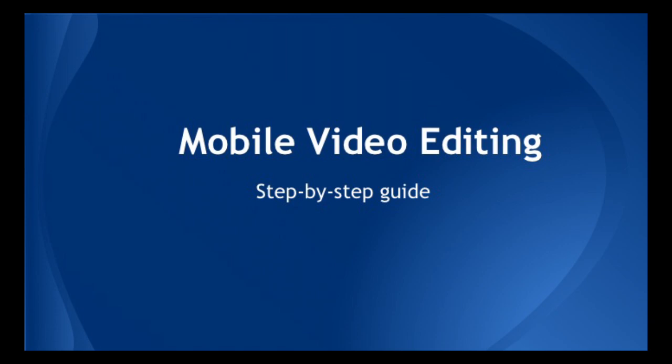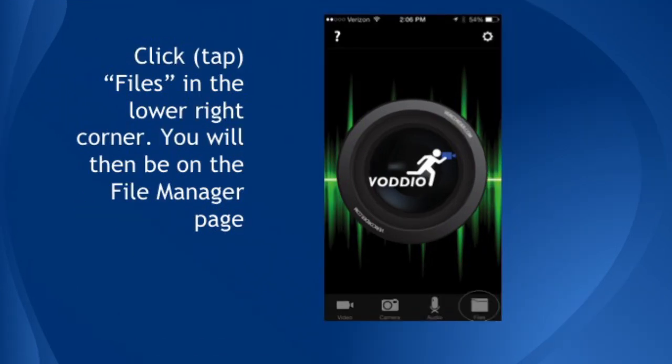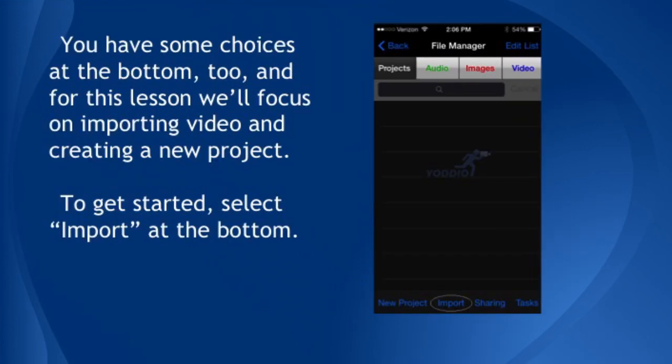When you launch the app, you will get the main screen, which is mostly black and features a cutout of a person over a camera lens. Tap the Files in the lower right corner. You will then be on the File Manager page. Notice you can select whether to view projects, audio, images, or video. You have some choices at the bottom too, and for this lesson, we'll focus on importing video and creating a new project.